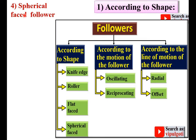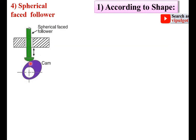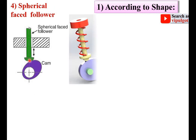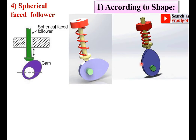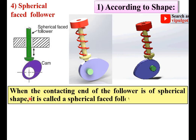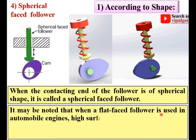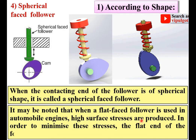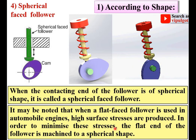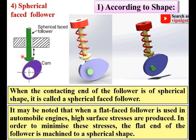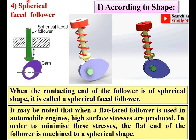Next, the spherical face Follower. Here you can see the shape is like a mushroom type, so it is sometimes called a mushroom Follower. When the contacting end of the Follower is of spherical shape, it is called a spherical face Follower. It may be noted that when a flat face Follower is used in an automobile engine, high surface stresses are produced. To minimize these stresses, the flat end of the Follower is machined to a spherical shape, and it then becomes known as a spherical face Follower.